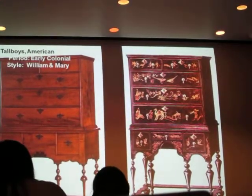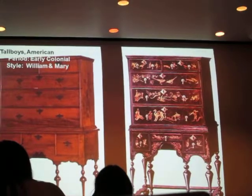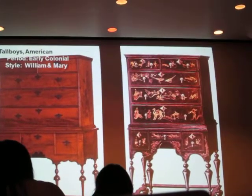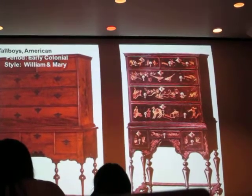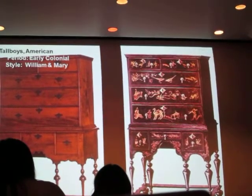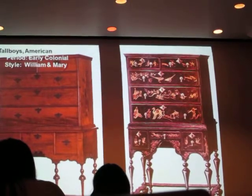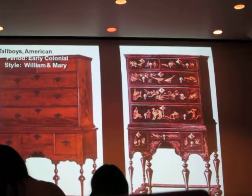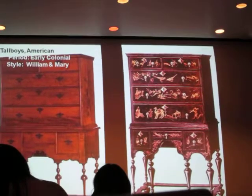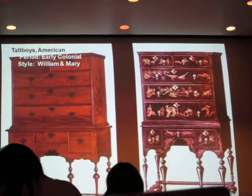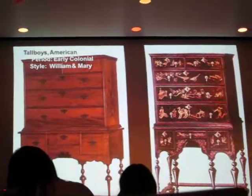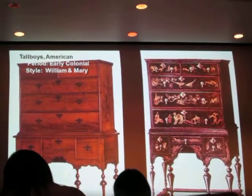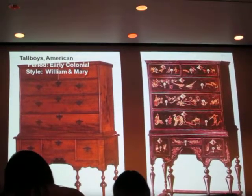Tall boys, whether American or English — both of these shown are American. The English would tend to have, in general, heavier legs. In William and Mary, all of them have four legs in the front and two legs in the back.